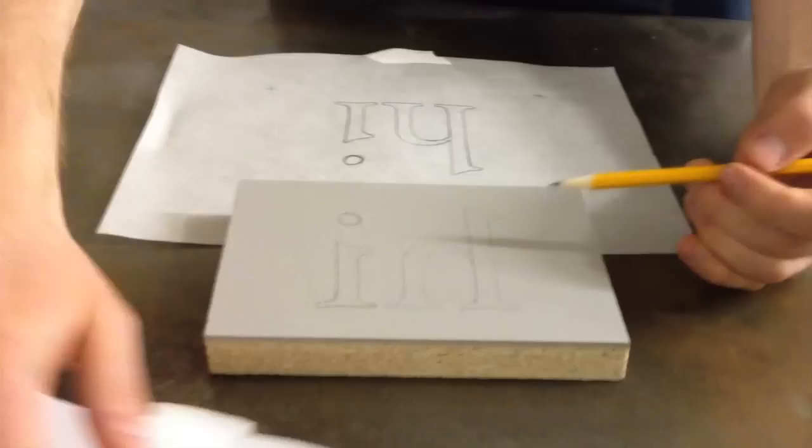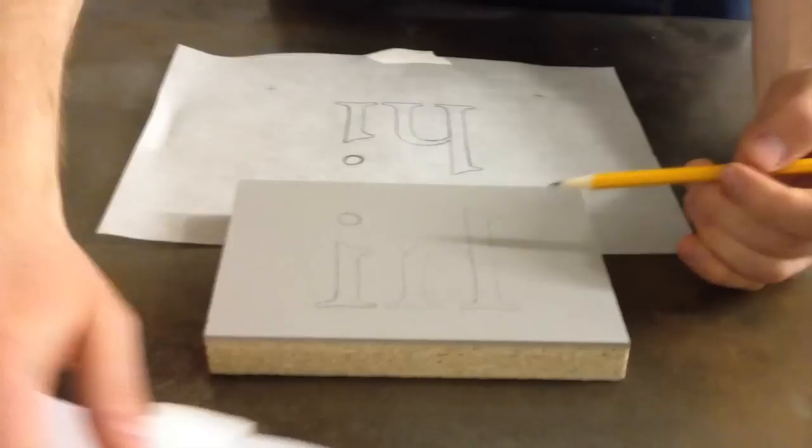There it is. I'll just fill all this in with Sharpie and then to get this image here, I would just go in and remove all of this area, the gray.